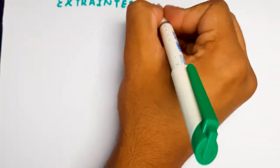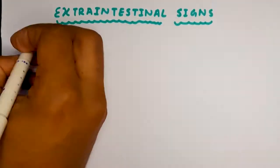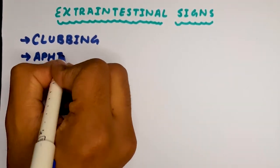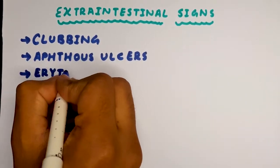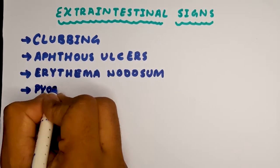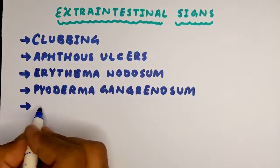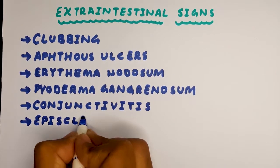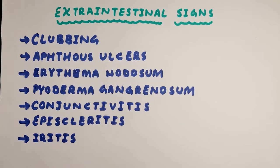There are a lot of extra-intestinal signs that can be seen with ulcerative colitis, like clubbing, aphthous ulcers, erythema nodosum, and pyoderma gangrenosum. They'll have conjunctivitis, episcleritis, and iritis.